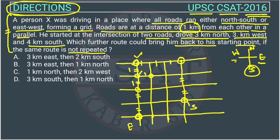Option A is three kilometers east and two kilometers south. Suppose he goes east: first, second, third — so he is reaching here. Then two kilometers south: first and then second. So he is going downward and the distance from the starting point is increasing. So this option is wrong — option A cannot be the answer.